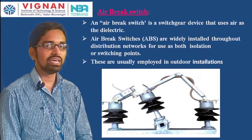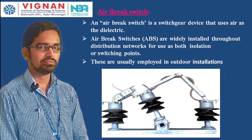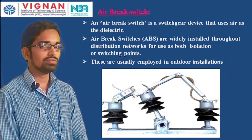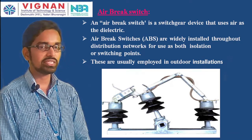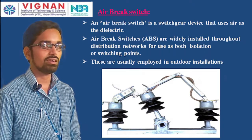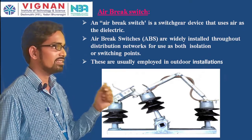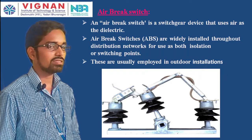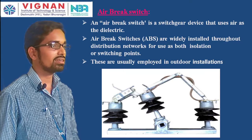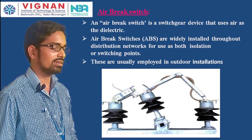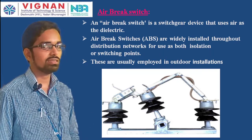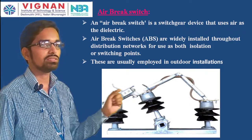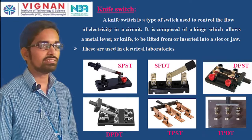An air brake switch is a switchgear device that uses air as a dielectric medium. Air brake switches are widely installed throughout distribution networks for use as both isolation and switching points, commonly at distribution transformers — called gang switches — to switch the transformer on or off. They are used in outdoor installations only.